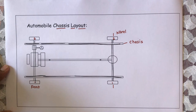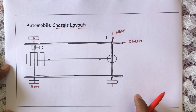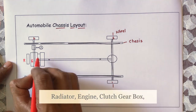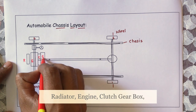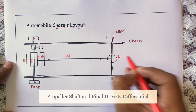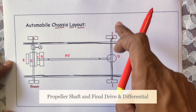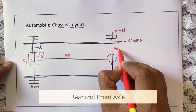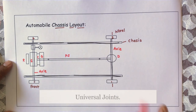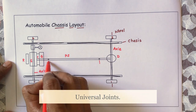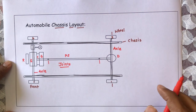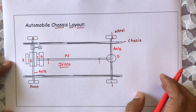This is the chassis frame. Now, which other parts are there? This is the radiator. This is the engine. This is the clutch. This is the gearbox. This is the propeller shaft. This is the final drive and differential gearbox. This is the rear axle and this is the front axle. These two circular parts are universal joints, also called old ham's coupling or another type of coupling.